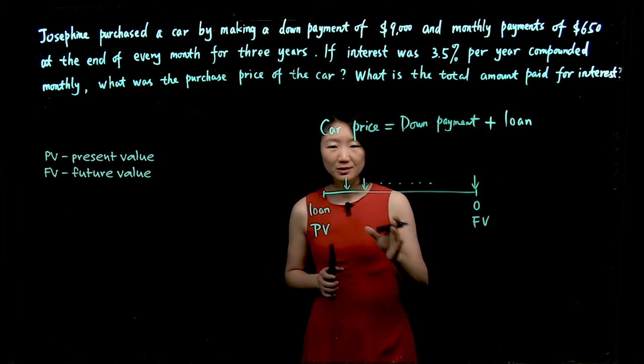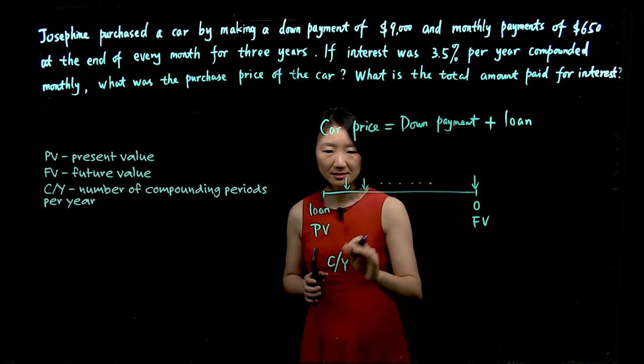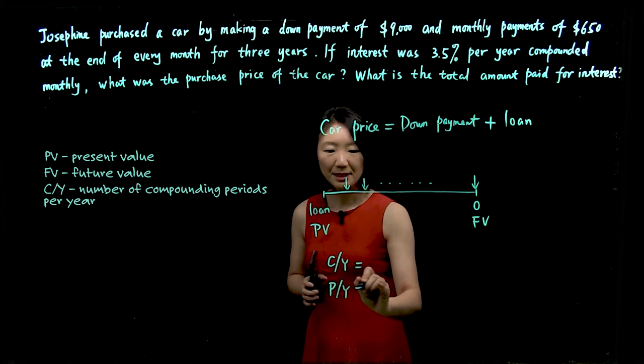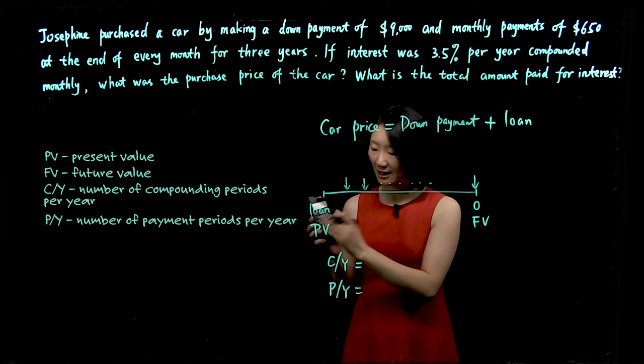To solve this problem, we need to identify seven variables. CY, compounding periods per year. PY, payments per year. And also on the calculator, this row, five buttons.